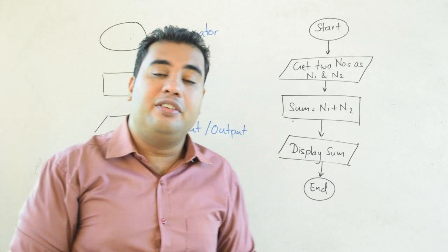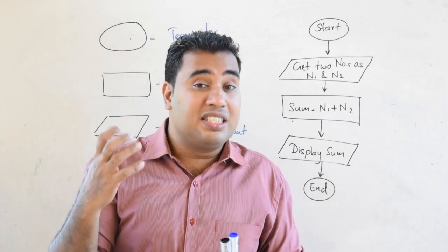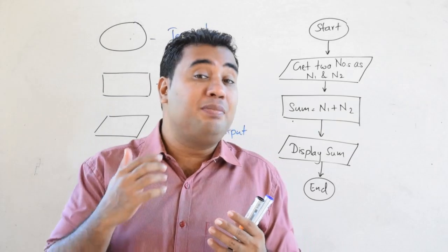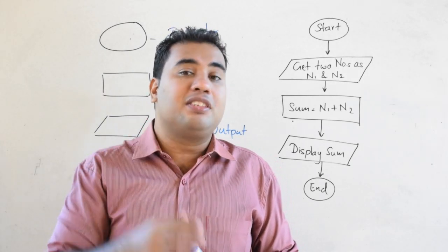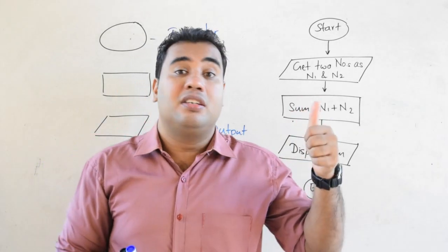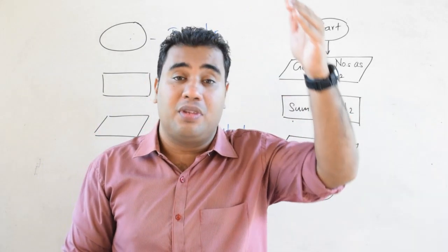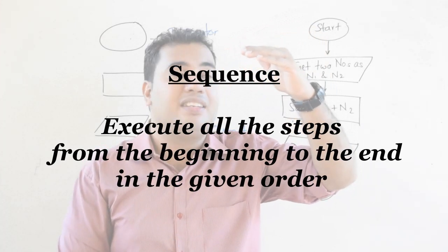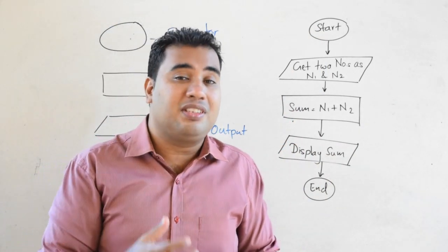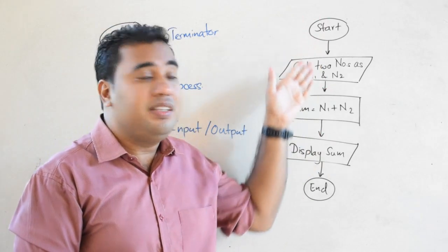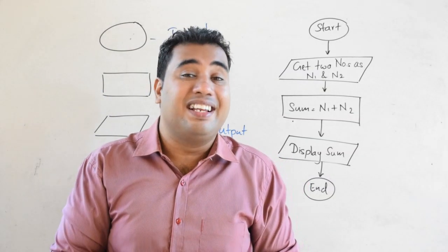That is a simple flowchart representing an algorithm. When discussing algorithms, there is another concept called control structures. A control structure defines what the next step to be executed is. The three main control structures are sequence, selection, and repetition. Sequence means starting from the beginning and going through steps in the given order until the end. The addition example we just did is a simple example of the sequence control structure.